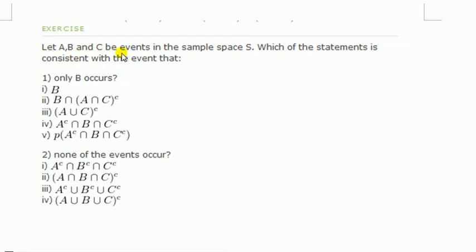Let A, B and C be events in the sample space S. Which of the statements is consistent with the event that 1. Only B occurs. 2. None of the events occur.